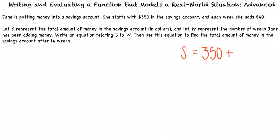Let's say that Jane now starts to add money to the savings account. We know that each week she adds $40. So let's consider a few specific cases. After zero weeks, the total amount of money will be S equals 350 plus 40 times zero, because she hasn't put any deposits of $40 in yet. When we simplify this, we get that S equals 350. This tells us that after zero weeks, Jane has $350 in her savings account.